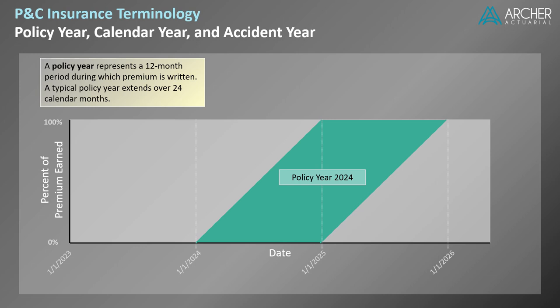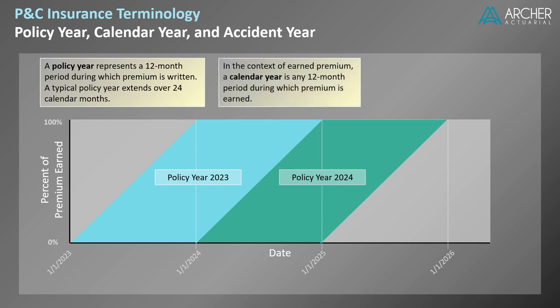The policies written in calendar year 2023 can be represented similarly. Let's discuss calendar year. In the context of earned premium, a calendar year is any 12-month period during which premium is earned. In this diagram, the premium earned during a calendar year is represented by a square. Consider calendar year 2024. The earned premium for calendar year 2024 is composed of premium from policy year 2023 and policy year 2024. The actual amount of earned premium can be calculated based on the written premium and the dates of the underlying policies.